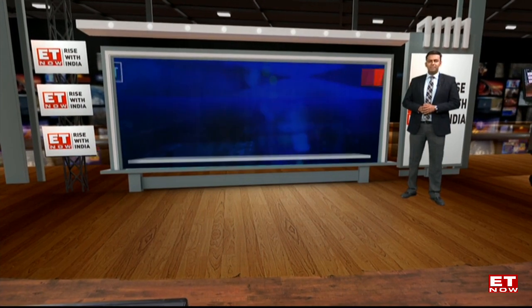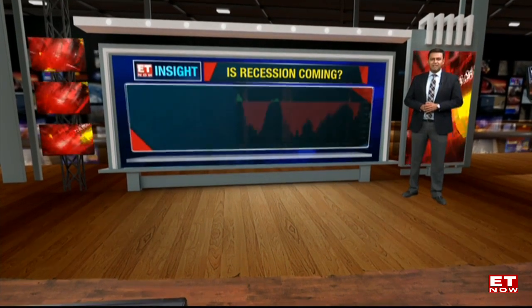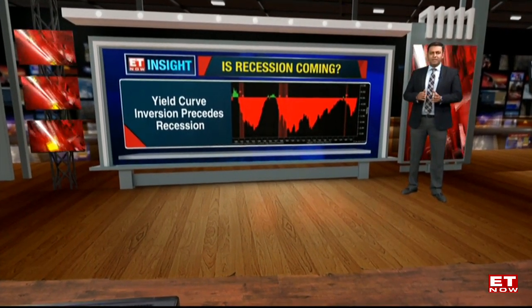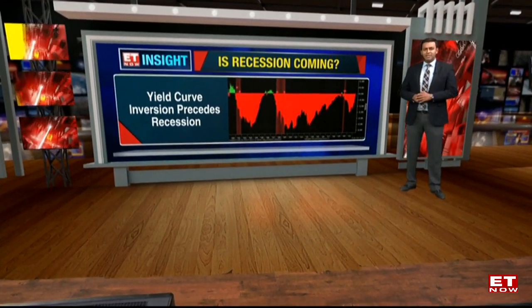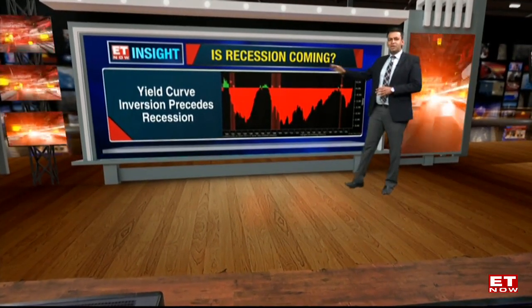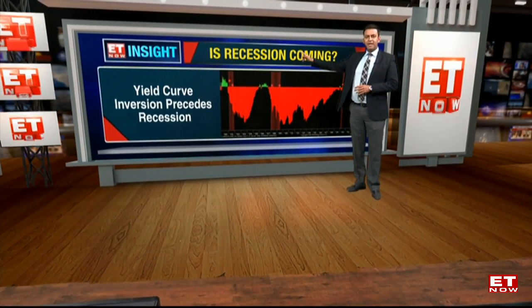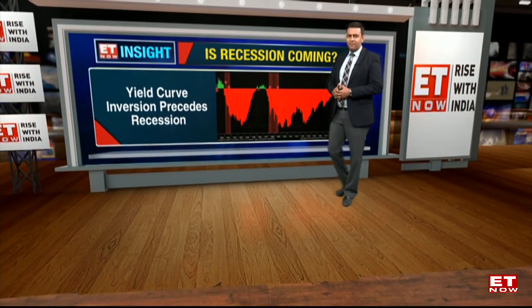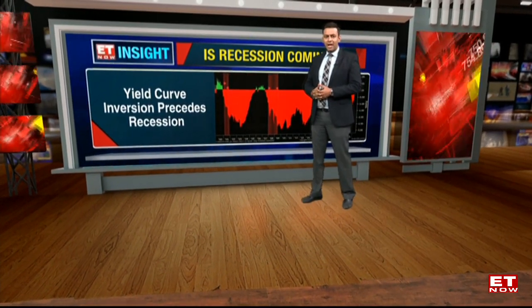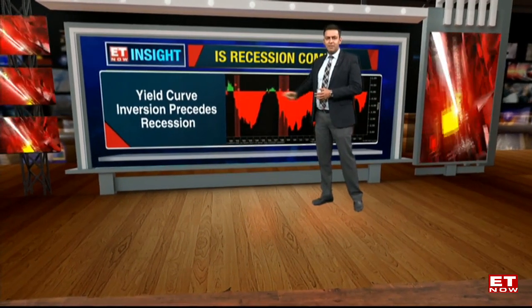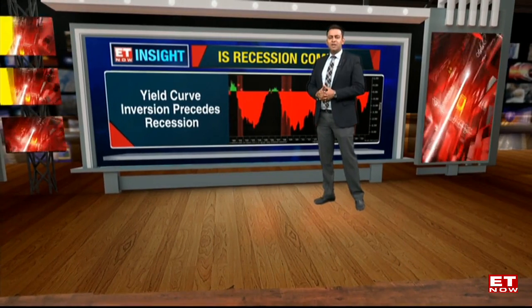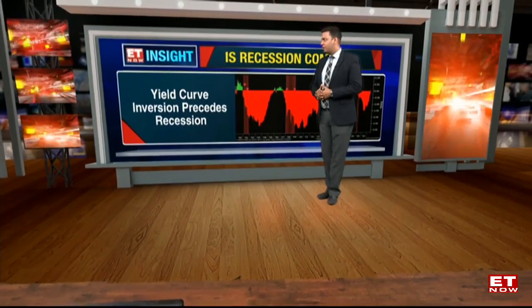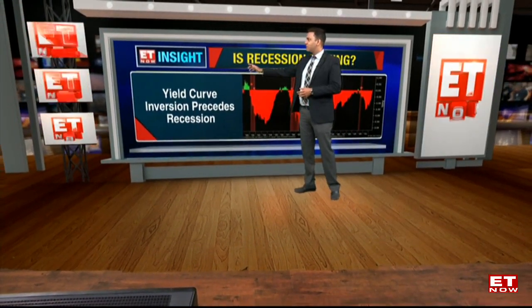Hi there. What we have done today is shown the yield curve inversion which has taken place in the past and how that has been a precursor to a recession. What we have on the charts is the red and the green lines which indicate whether the curve has inverted or not, and the big red bars are the recessionary periods that I'm referring to. Let me just break it down for you.